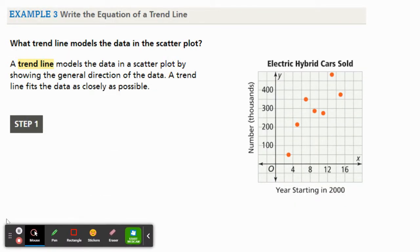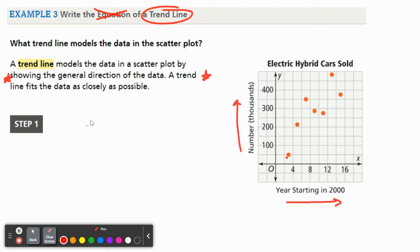Next here it says, write the equation of a trend line. We're not going to write the equation of a trend line here. We're just going to talk about what a trend line is. A trend line models the data in a scatter plot by showing the general direction. A trend line fits the data as close as possible. We have a year starting in 2000, number of electric hybrid cars sold in the thousands. The year 2003, there's only like 50,000 cars. But as the time goes past and more companies start to build more hybrid cars, more hybrid cars are sold. This would show a positive association.